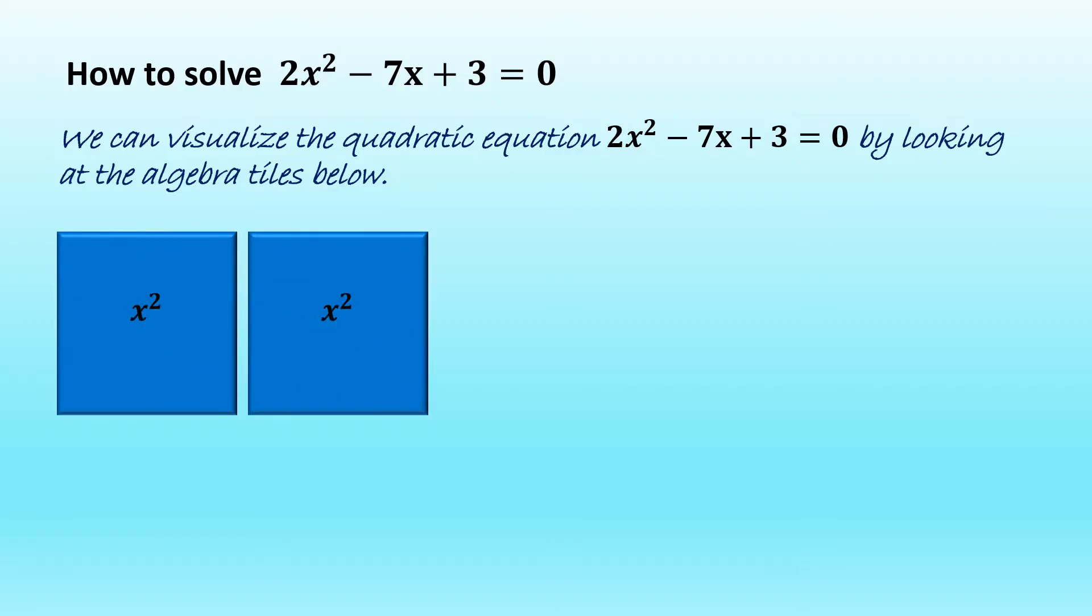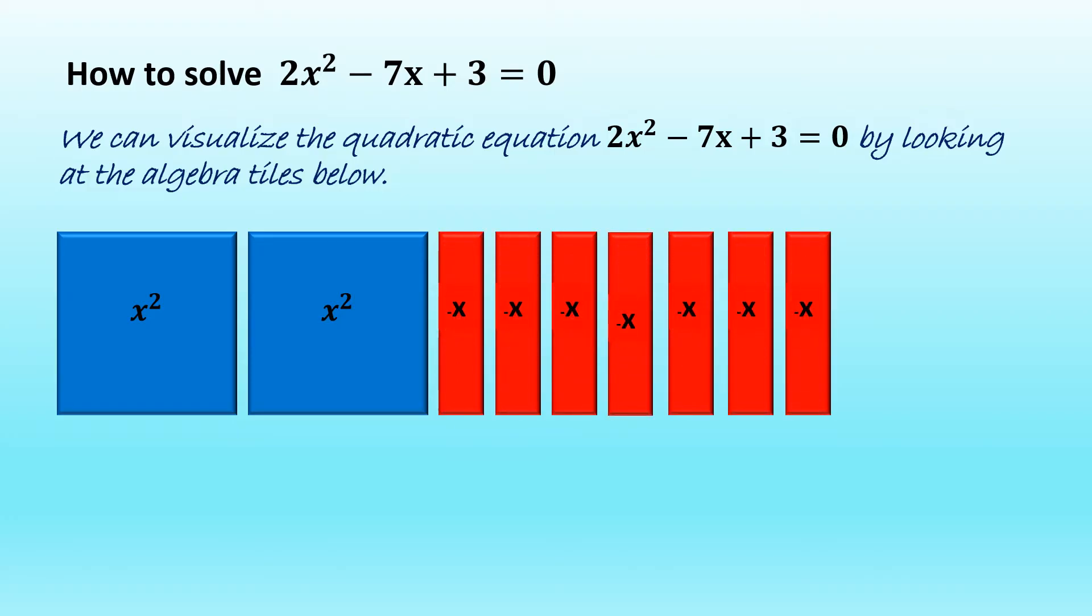We have 2 blue large tiles to represent 2x squared and 7 red tiles to represent negative 7x and 3 yellow square tiles to represent the units 3.